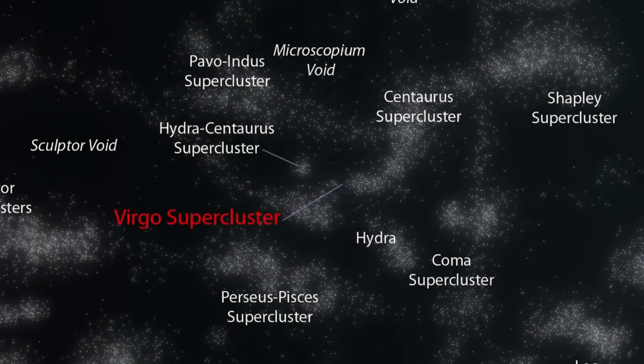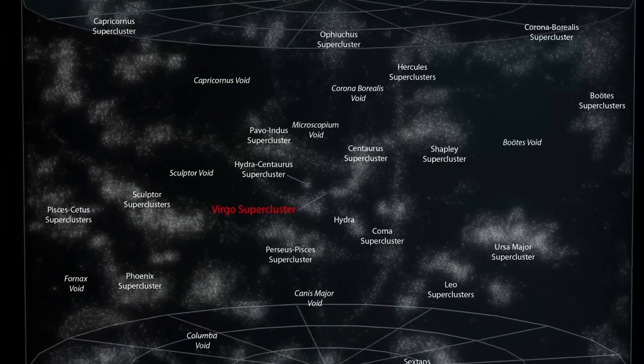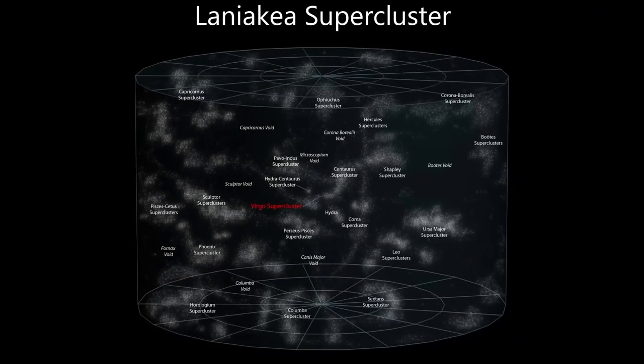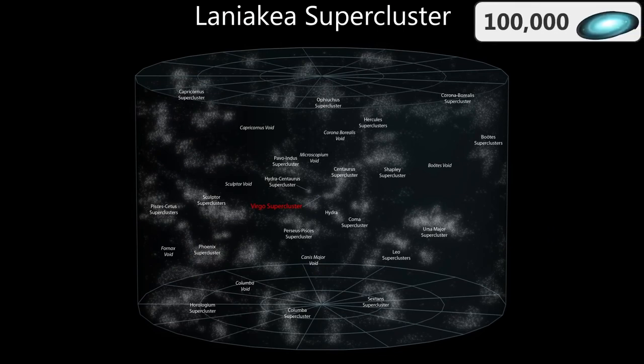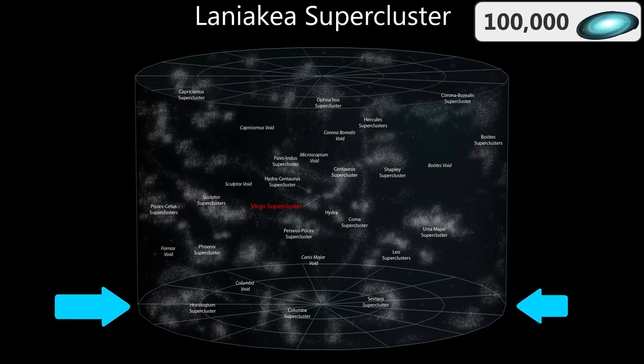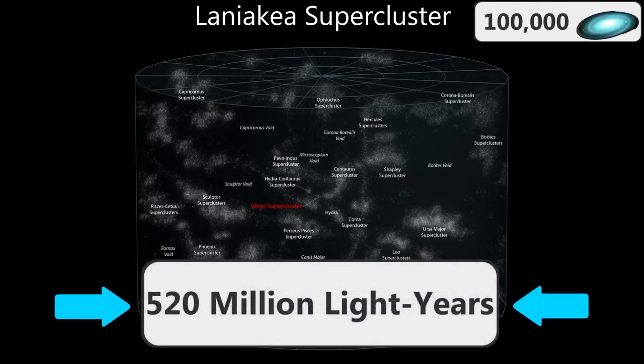But even the massive Virgo supercluster is nothing but a quiet and tiny lobe of the Great Laniakea supercluster, an enormous structure that is home to our galaxy as well as 100,000 other galaxies. The distance from one side to the other is 520 million light years.